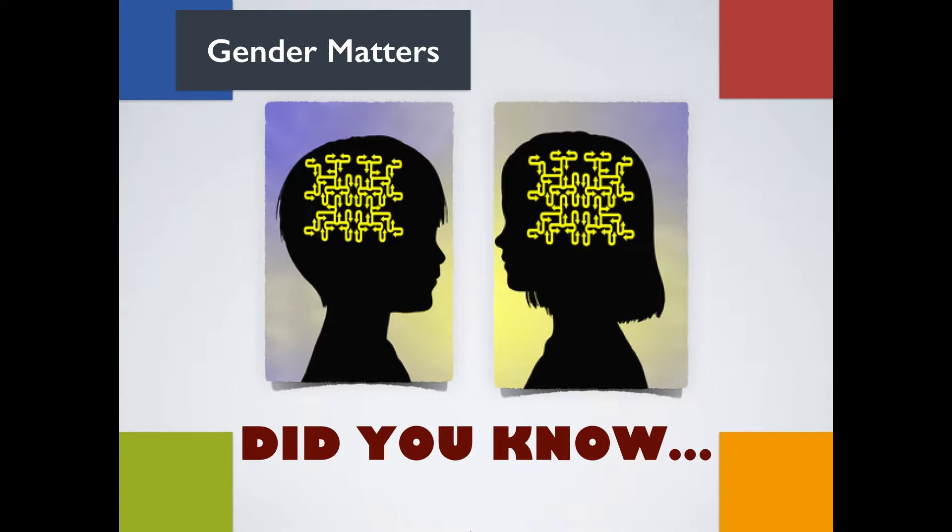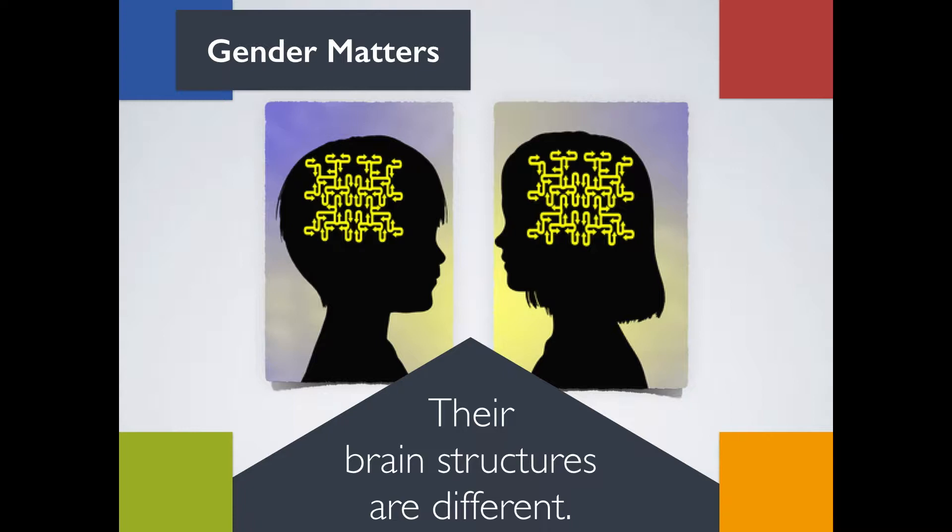One major physical difference between girls and boys is their brain structure. Take a minute and look at the diagrams. Next, we'll share how all of this information plays a part in why boys and girls do what they do.